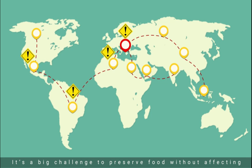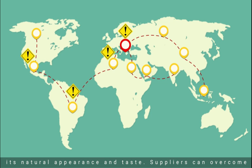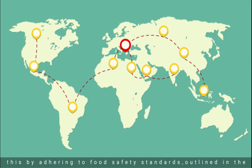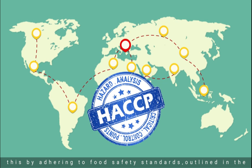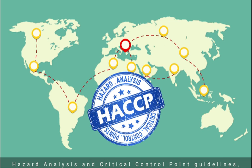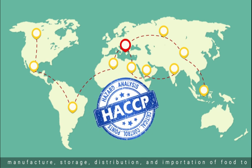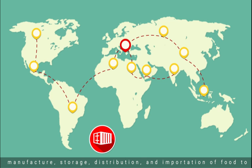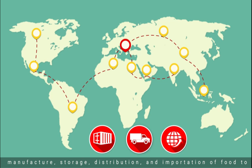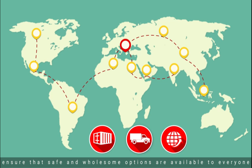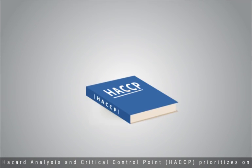It's a big challenge to preserve food without affecting its natural appearance and taste. Suppliers can overcome this by adhering to food safety standards outlined in the Hazard Analysis and Critical Control Point guidelines, also known as HACCP. These standards regulate the manufacture, storage, distribution, and importation of food to ensure that safe and wholesome options are available to everyone.